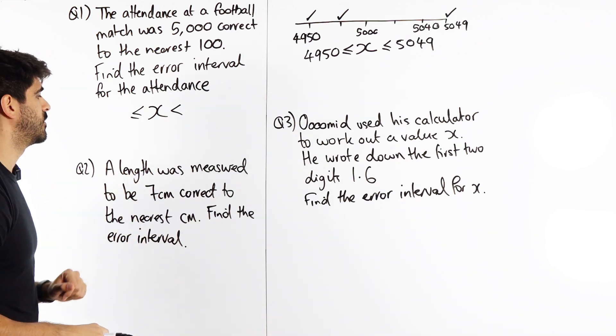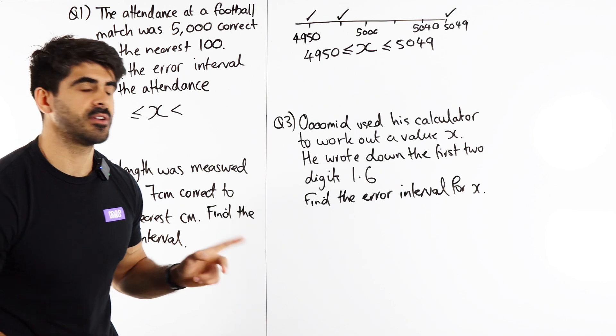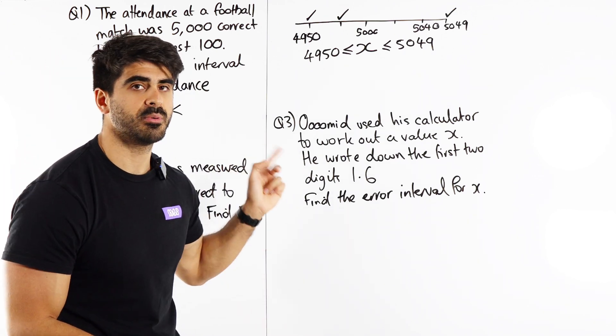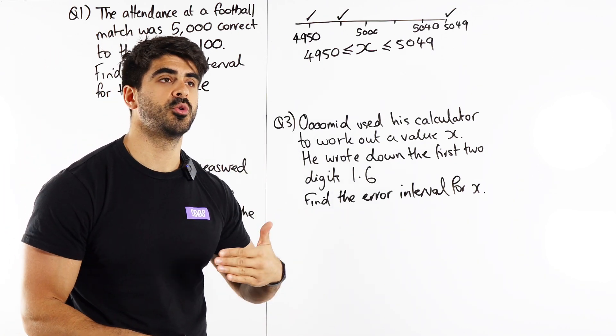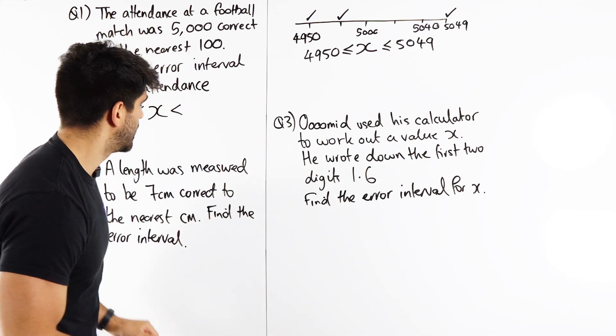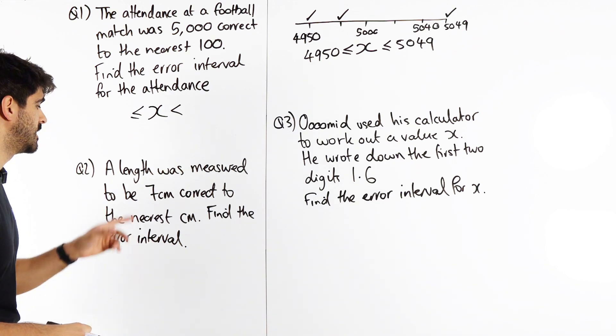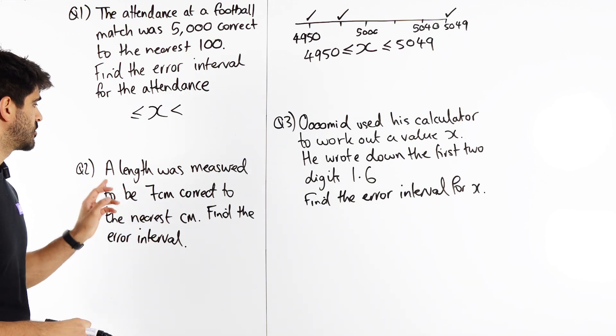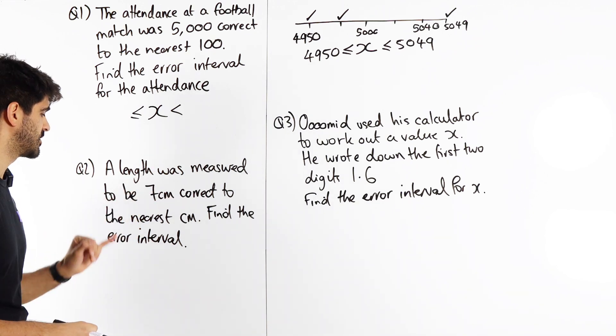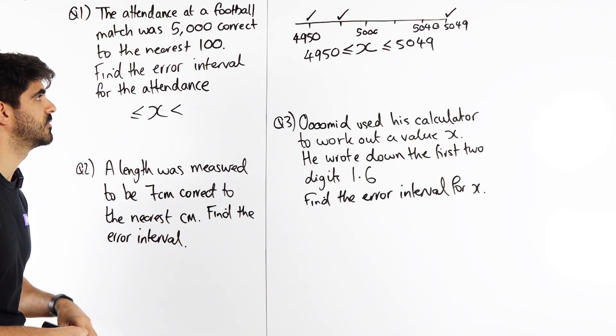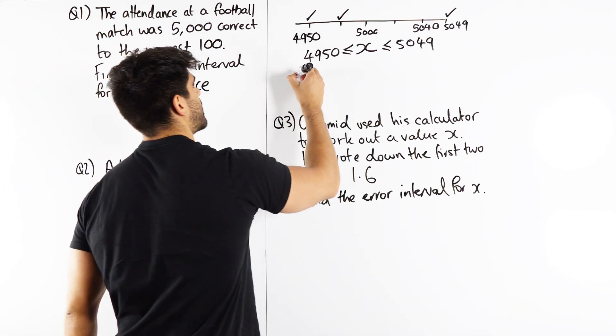How does it work with lengths? Why is lengths different to attendance? Well attendance is talking about people, whole numbers, no in-between values. A length is a continuous variable we can have decimals. How would it work? 7 centimetres, so a length was measured to be 7 centimetres correct to the nearest centimetre, find the error interval.